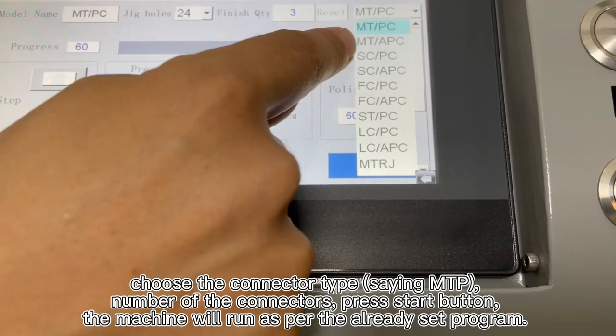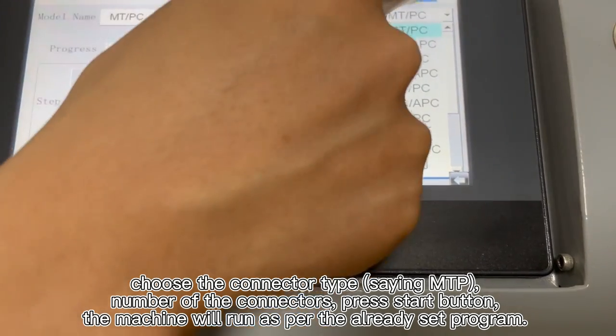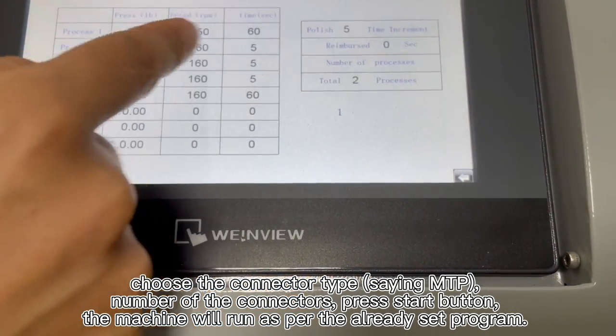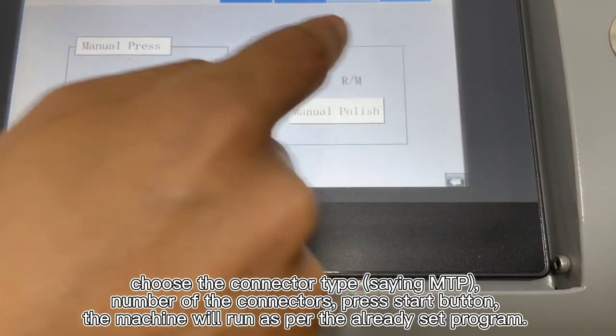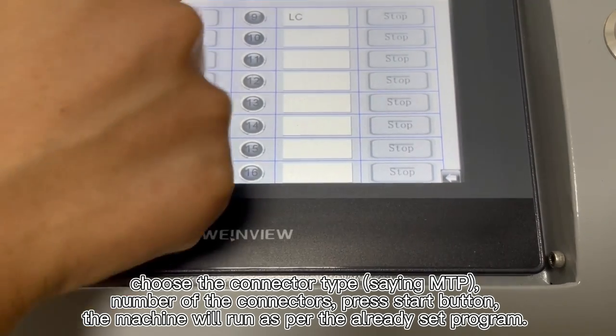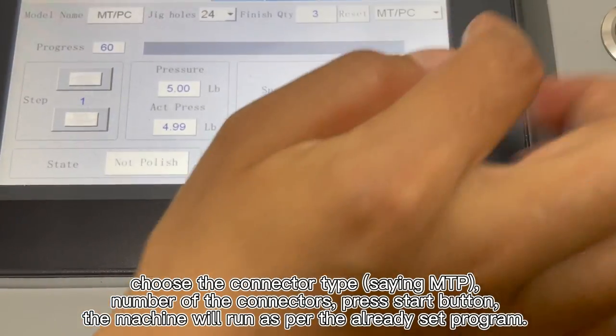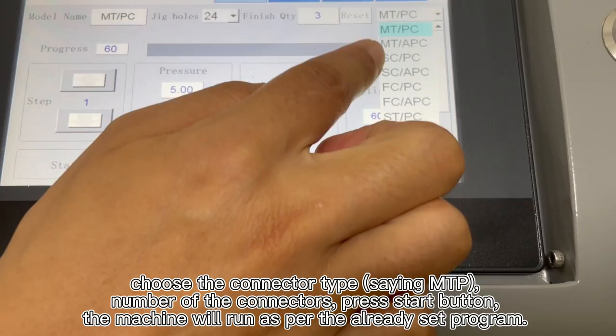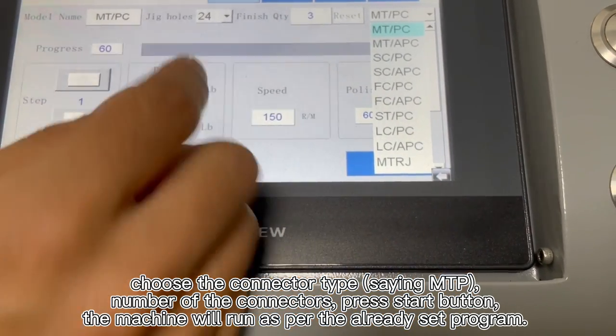But here you can press here to choose different connector types. You have set the parameters also here. You have set different processing processes for each connector here. And in the main menu page, you can just change and choose different connectors.